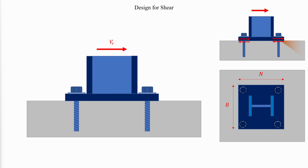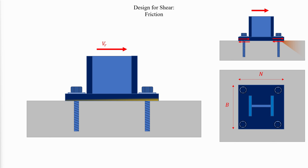There are three principal ways of transferring shear from column base plates into the concrete: friction between the base plate and the grout or concrete surface; bearing of the column base plate and/or shear lug against a concrete surface; or shear in the anchor rods. In typical base plate situations, the compression force between the base plate and the concrete will usually develop shear resistance sufficient to resist the lateral forces. The shear strength can be calculated in accordance with ACI criteria.